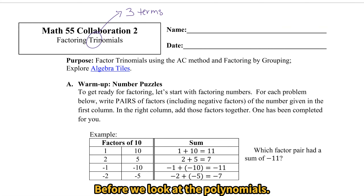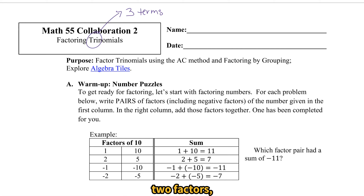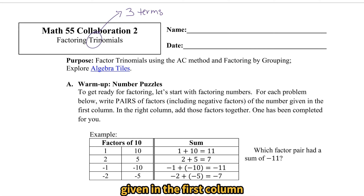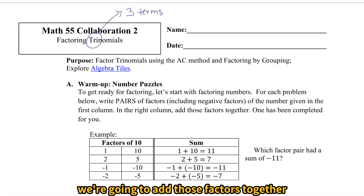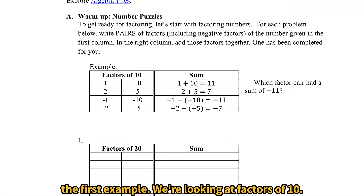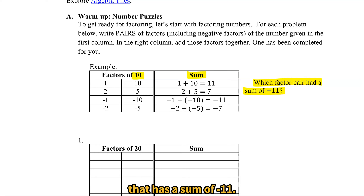Before we look at the polynomials, let's just start with numbers. We'll play a little number game. We want to write pairs of factors — two factors, including negative numbers — for the number given in the first column, and then in the right column we're going to add those factors together and see if we can come up with the answer to the question. So in the first example, we're looking at factors of 10, and we want to add them together, and our goal is to find the factor pair that has a sum of negative 11.